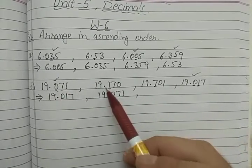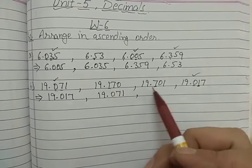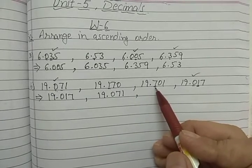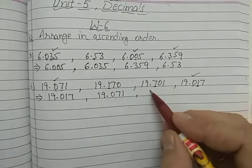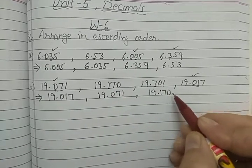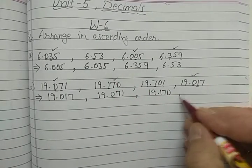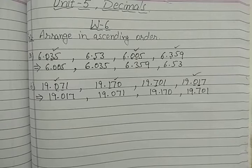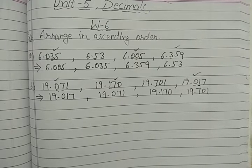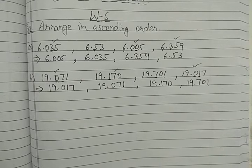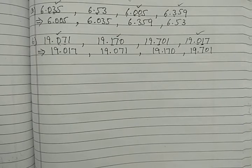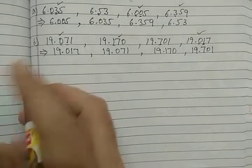Now two numbers are left. Looking at the tenths place: one number has 1 and the other has 7. One is smaller, so 19.170 is next. The last remaining number, 19.701, is the greatest. That is the ascending order for part B. Two questions are left — try to solve those two parts of question number two yourself, and we will start question number three.